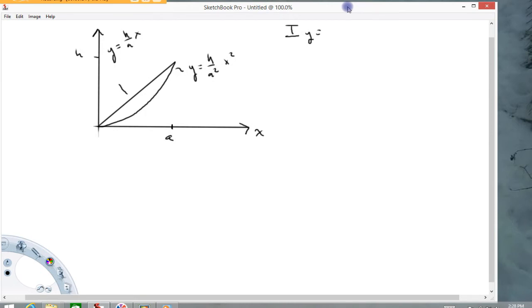So what we're going to do here is we are going to take a look at these two curves here, one defined by y equals a over h times x, and another one here, this parabolic curve defined by y equals h over a squared x squared. And what we're going to try to calculate here is Iy, the moment of inertia of this area about the x axis.